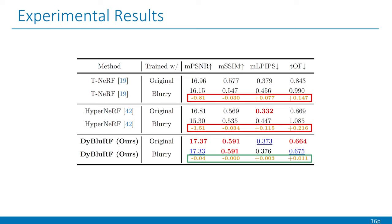On the other hand, both T-NeRF and HyperNeRF experience substantial performance declines across all metrics when trained with the proposed blurry iPhone dataset.